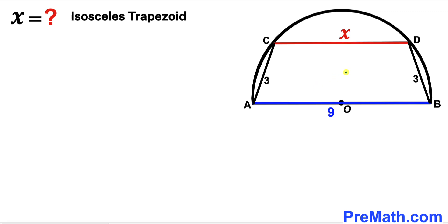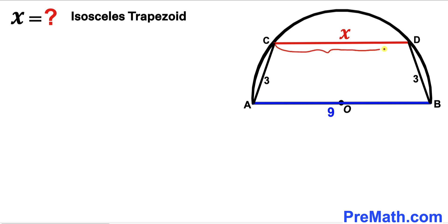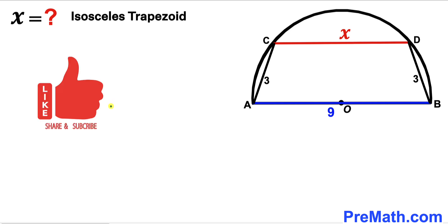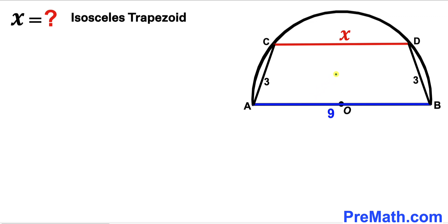Welcome to pre-math. In this video we have got this isosceles trapezoid ABDC fully inscribed in a semicircle with a center, as you can see in the given diagram, such that this base AB of this trapezoid is 9 units. The other base CD, which is also the chord, is represented by x. Furthermore, these legs AC and BD are 3 units each. Our task is to calculate the length CD — in other words, we are going to find the value of x. Please keep in mind that this figure may not be 100% true to scale.